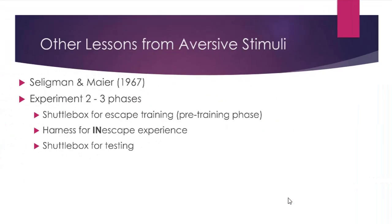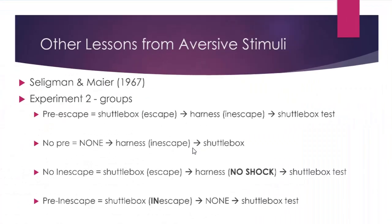In their second study, there were actually three phases: a shuttle box pre-phase for escape training, then a harness phase for inescapable shock experience, then the shuttle box test. Several groups were used: the pre-escape group was allowed to escape in the shuttle box, received inescapable shock in the harness, then took the shuttle box test. The no-pre group had no pre-exposure to the shuttle box, received inescapable shock, then were tested. The no-inescapable group never had inescapable shock — they escaped in the shuttle box, were put in the harness with no shock, then tested. The pre-inescapable group received inescapable shock in the shuttle box, no middle phase, then took the shuttle box test.